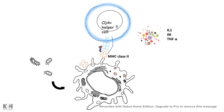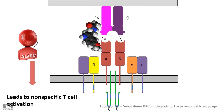People still question what benefit this non-specific T cell activation has for the body, but the body is largely harmed rather than benefited. Superantigens are capable of activating at least 20 to 30 percent of the T cells in our body, whereas a specific antigen can only activate one or two percent. This huge non-specific activation changes the microenvironment where immune responses occur.